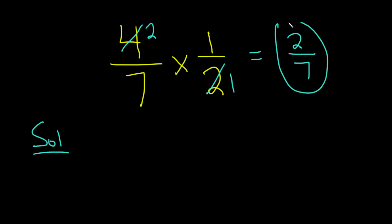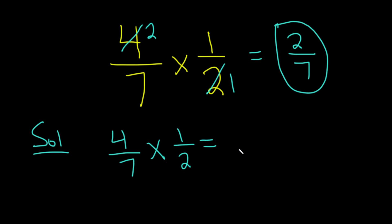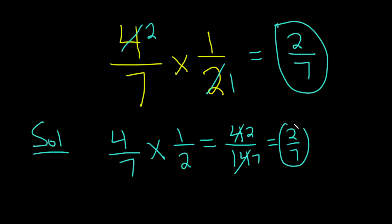Another way to do it is when you see the problem, 4 over 7 times 1 over 2, just multiply straight across. 4 times 1 is 4, 7 times 2 is 14. Then, 2 goes into 4 twice, and it goes into 14 seven times, so this is going to be 2 over 7.